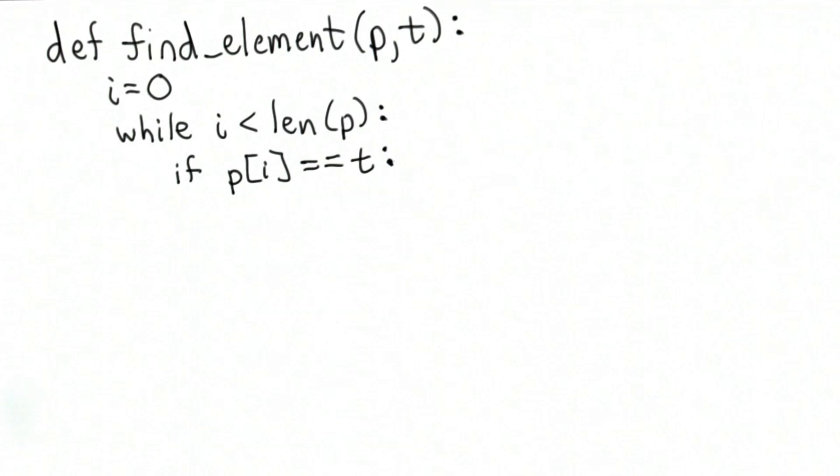In the block of the while loop we want to check if the current element matches t. So we get the current element using p index i, and then we use the double equal to test if it's equal to t. If we find a match, meaning the two values are equal, then we want to return the index that we found. So the result should be the value of i, which is the index where we found the matching element.